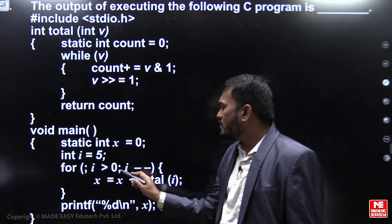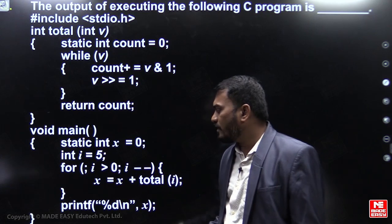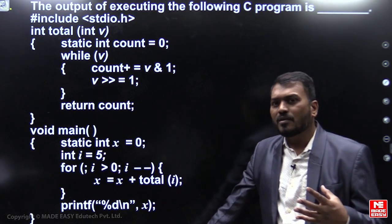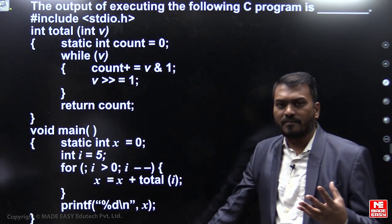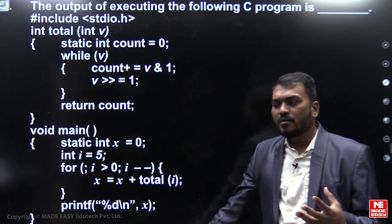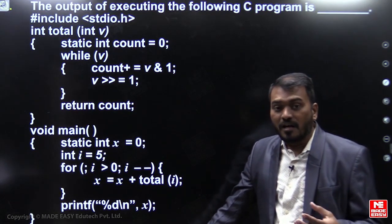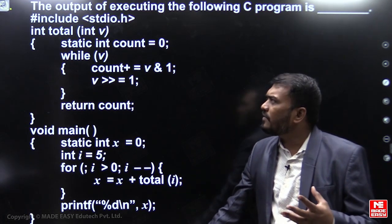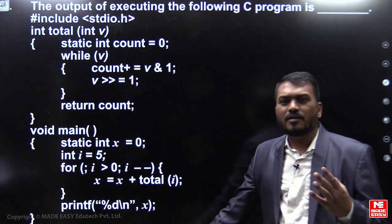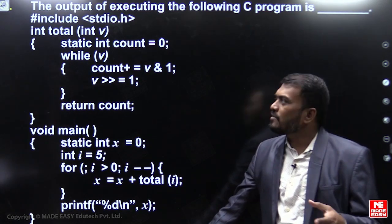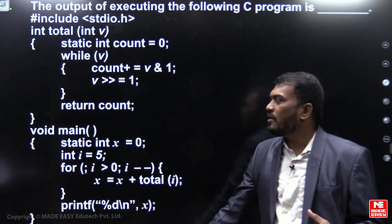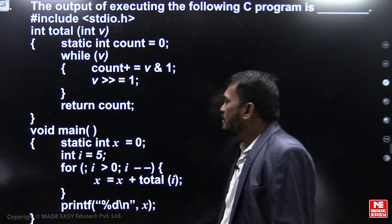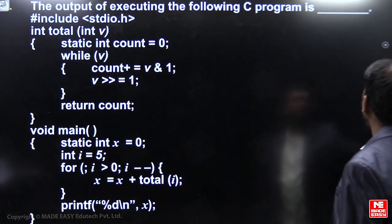Say you have i equal to 5, i greater than 0 — you are executing the code for five times. Instead of running all five iterations, just execute one or two iterations to understand the behavior of the function — what the function is actually doing. Many students have difficulty solving this question, so pay attention.